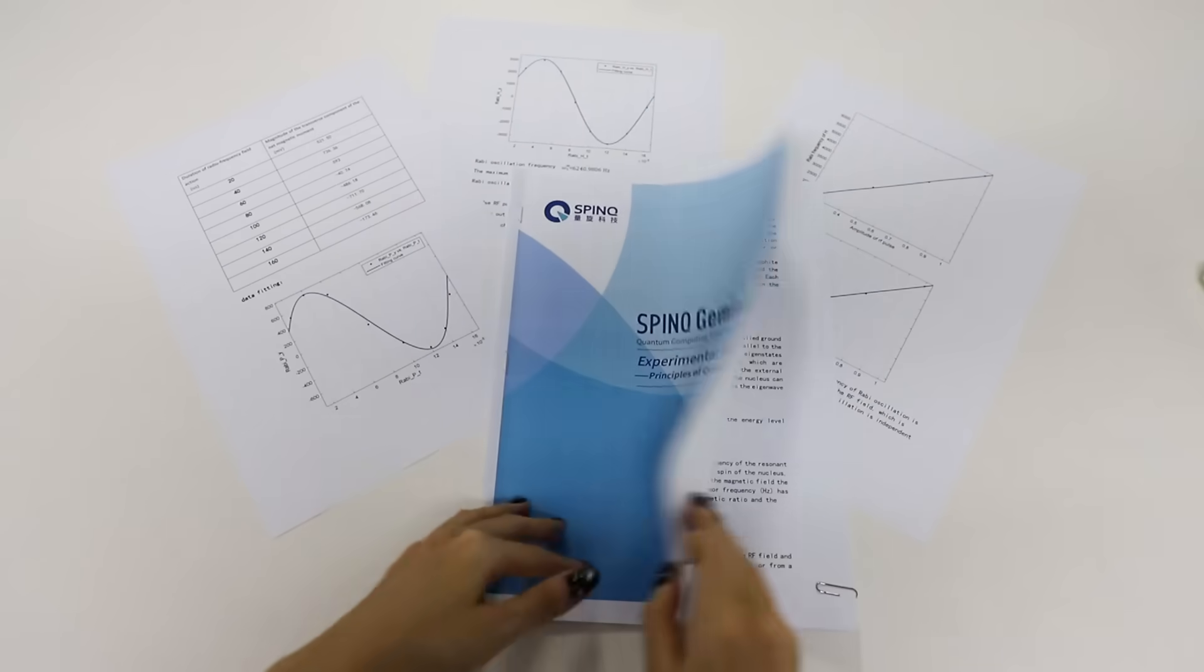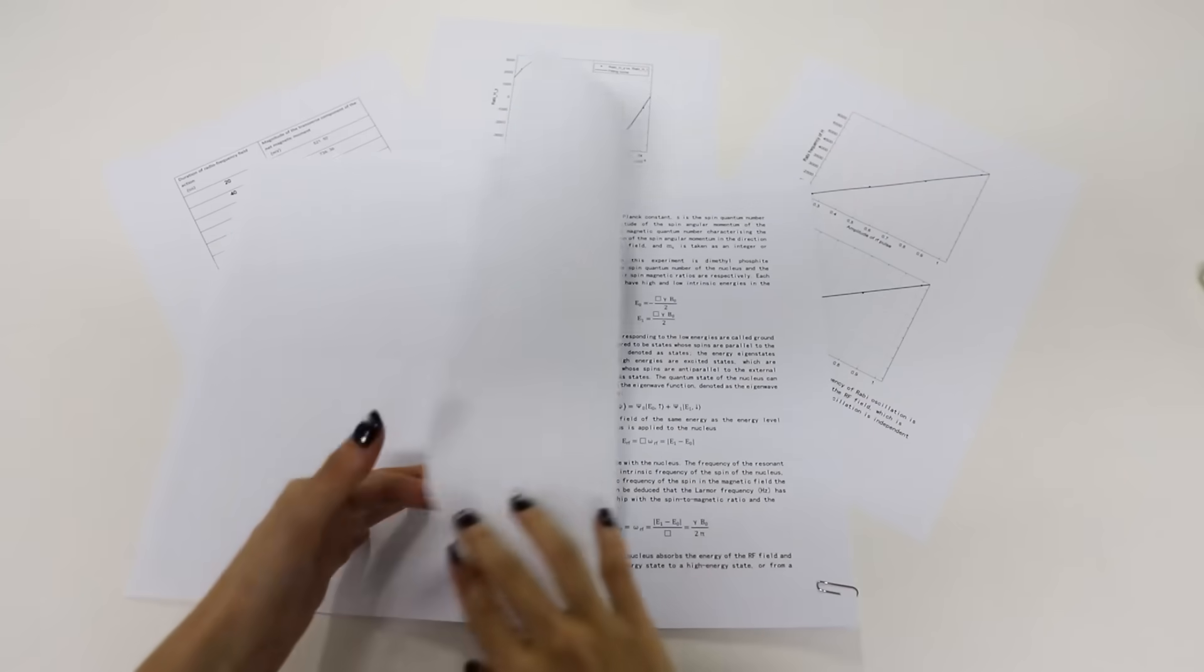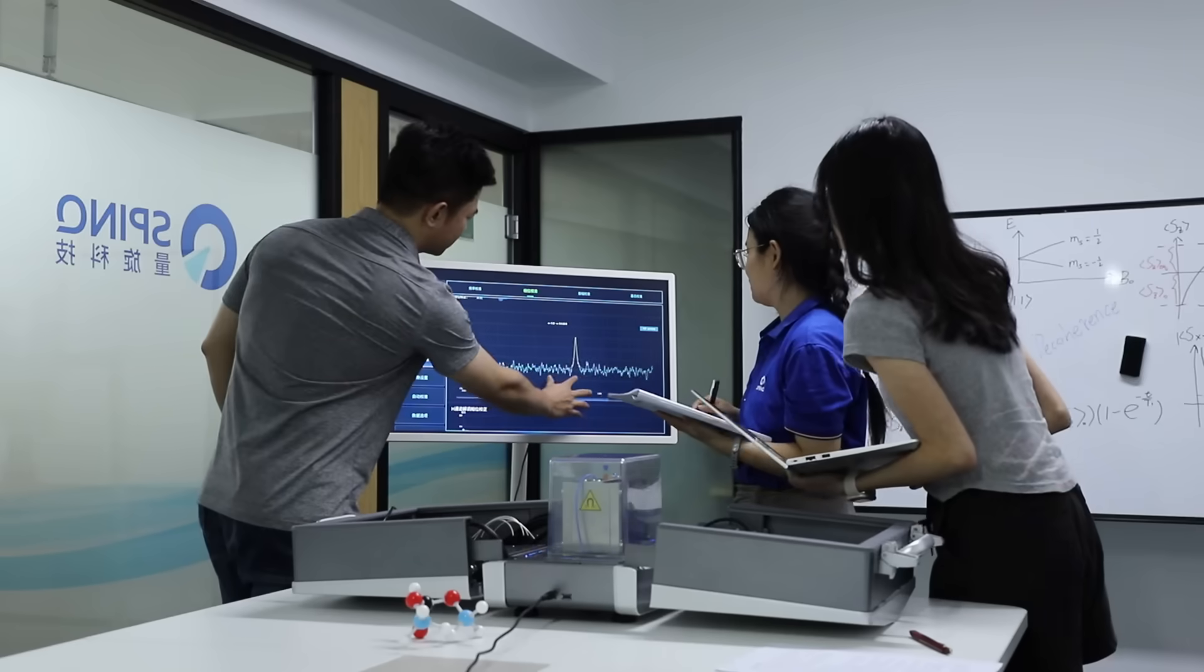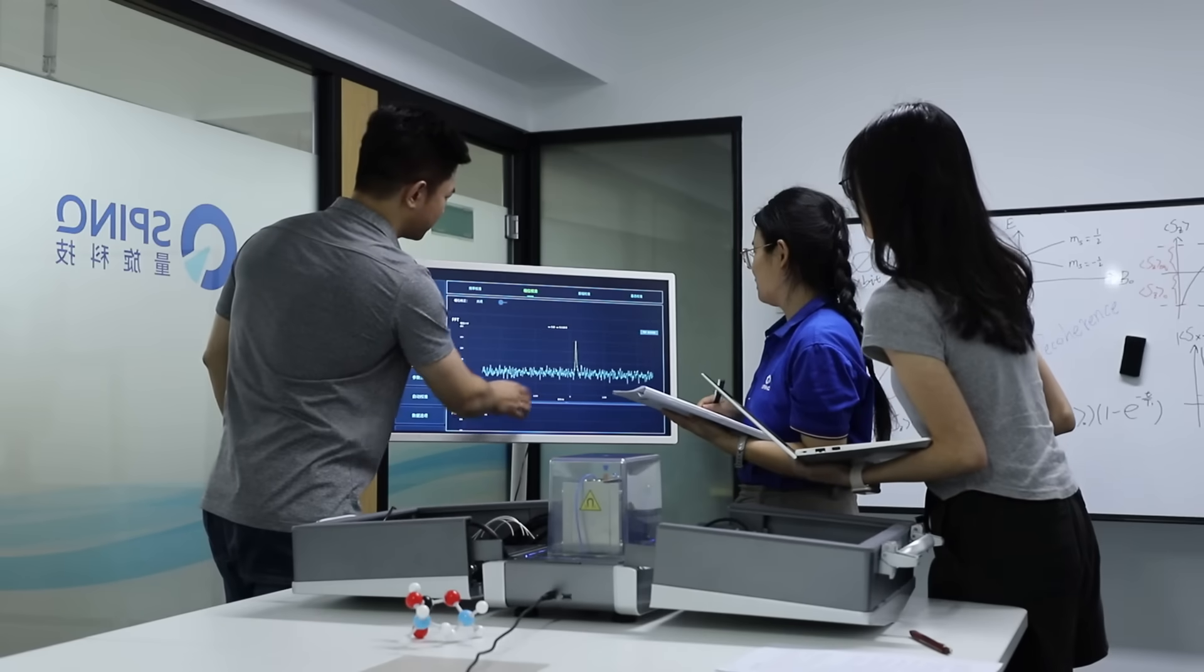According to the contents of the experiment handbook, teachers can explain experiments, while students can do pre-experiment preparation, experiment operation, data recording, and experiment report writing.